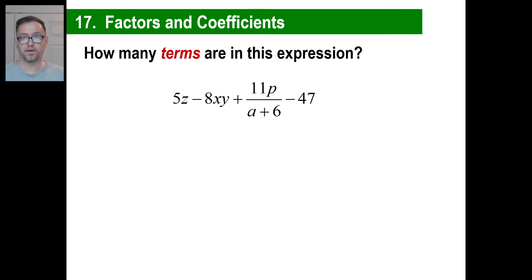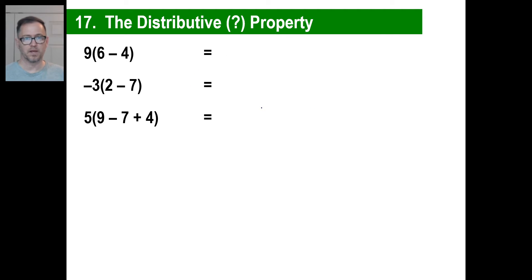Now look at this expression. Looks very complicated, don't let that throw you. We're not going to do anything with this except tell how many terms are in the expression. Here's a term, 5Z. Here's another term, negative 8XY. Here's another term, positive 11P over a plus 6. Here's another term, negative 47. Four terms. Generally, you can look at the number of pluses and minuses between items. There's a minus, there's a plus, there's a minus. There's three of them, so we need one more, that'll be four terms. Now this plus here is part of this single term, so they don't count that.